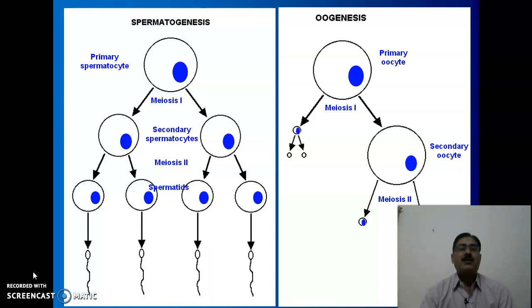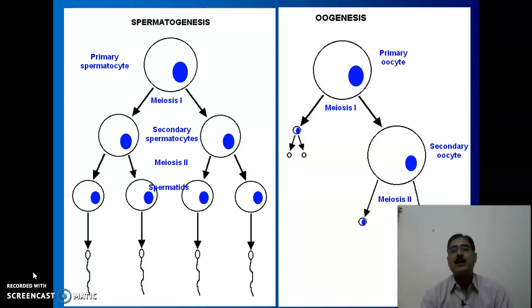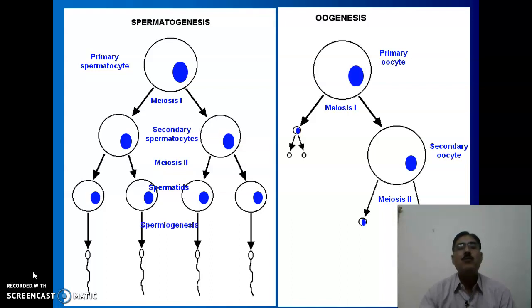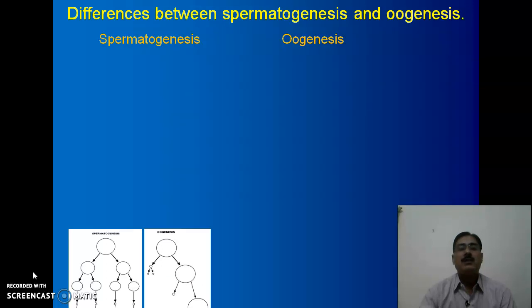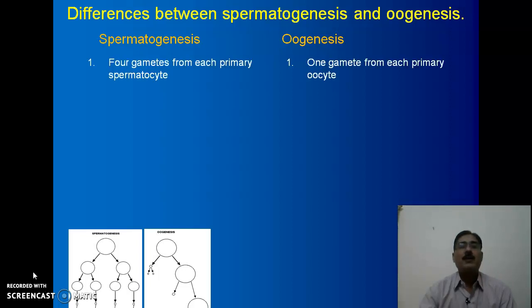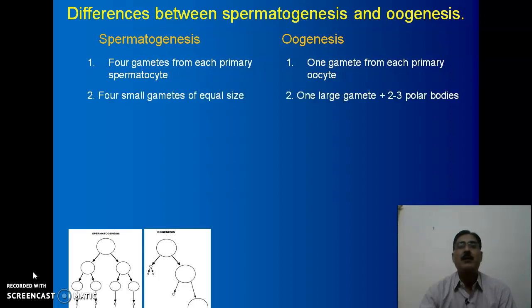Now let us compare spermatogenesis and oogenesis. In spermatogenesis, four spermatids are formed, which after metamorphosis become four functional sperm. In oogenesis, the primary oocyte undergoes meiosis one to form one polar body and a secondary oocyte; then during meiosis two, another polar body is formed — so a total of three polar bodies plus one functional ovum is formed during oogenesis. In spermatogenesis there are four gametes from each primary spermatocyte, while there is only one gamete from each primary oocyte in oogenesis. In spermatogenesis, four small gametes of equal size are produced.